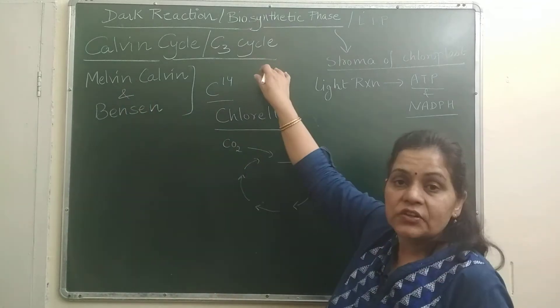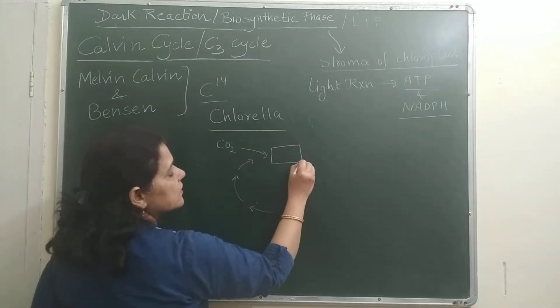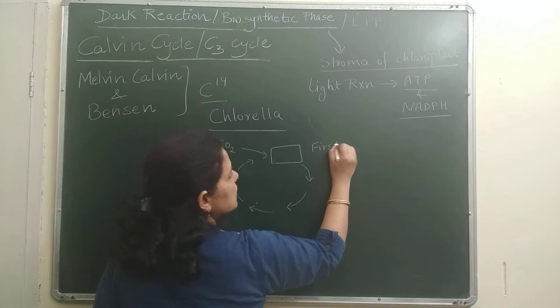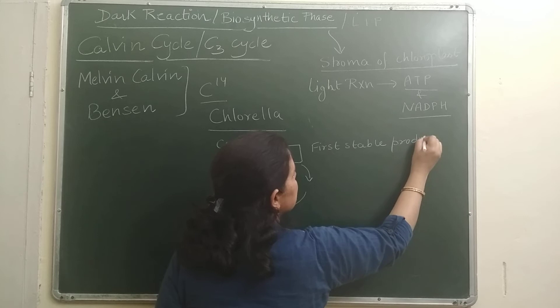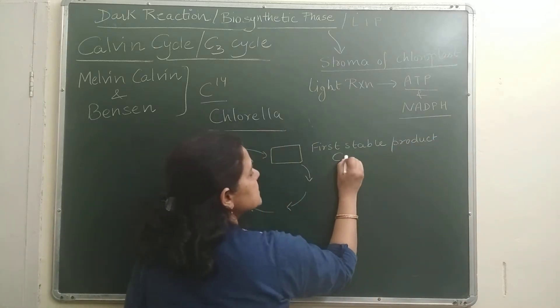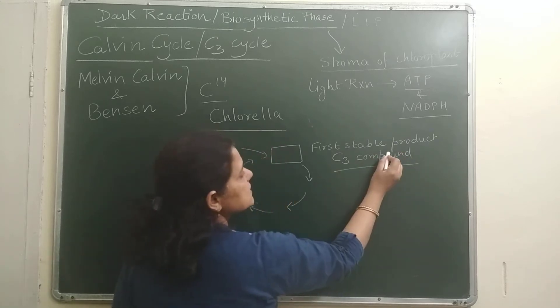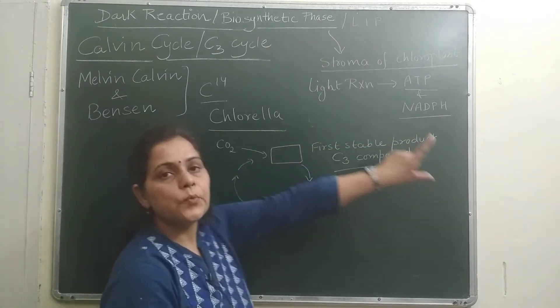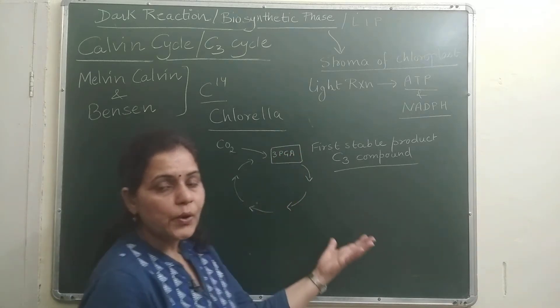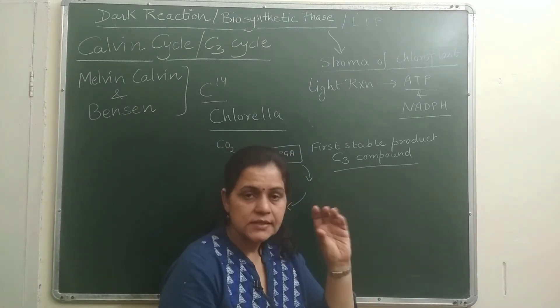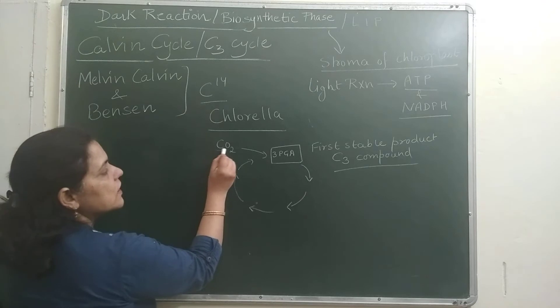Now this cycle is also known as C3 cycle. Why do they say C3 cycle? Because the first stable product of this cycle is a 3-carbon compound. And what is that stable product? That is 3-phosphoglyceric acid, 3-PGA.